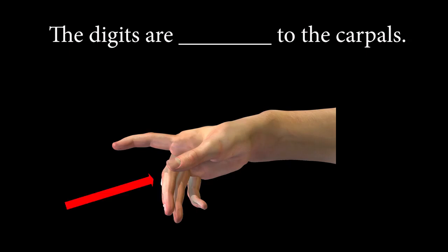The digits are ___ to the carpels. If you said distal, you are correct. Remember, we use the words distal or proximal when referring to body parts on the same appendage.